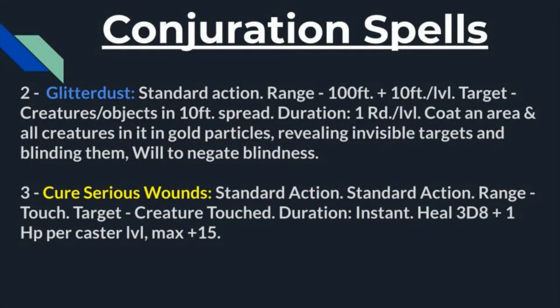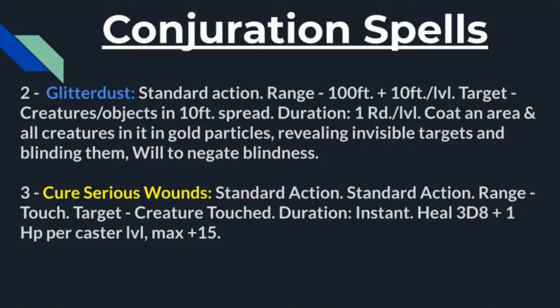Moving on to a spell that is undeniably great, coming in at second level: Glitterdust. Standard action to use, range is 100 feet plus 10 feet per level, targets are any creatures or objects within a 10-foot radius spread, and duration is one round per level. You coat an area and all creatures within it with gold particles, revealing any invisible targets and potentially blinding them, though they get a Will save to negate the blindness. Even if the blindness doesn't land, you've still revealed that invisible target.